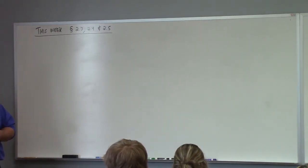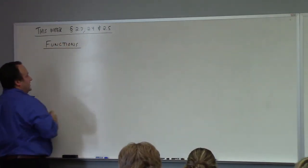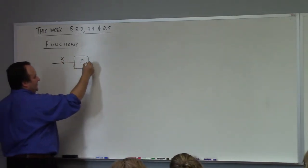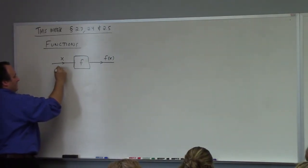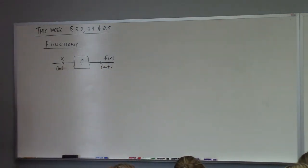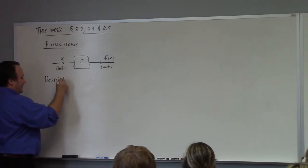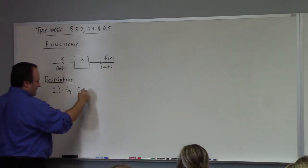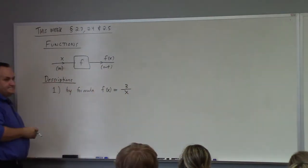So today we're talking about functions. What's a function? Something in, something out — that's a good way to think of it. It's a machine: you put x into it and what comes out is f of x. So you can think of a function as a machine that takes one thing and spits it out. We can describe such a thing in a few different ways. Most often we describe it by a formula — like f of x equals 3 over x, or f of x equals x squared plus 1, or f of x equals the square root of x.